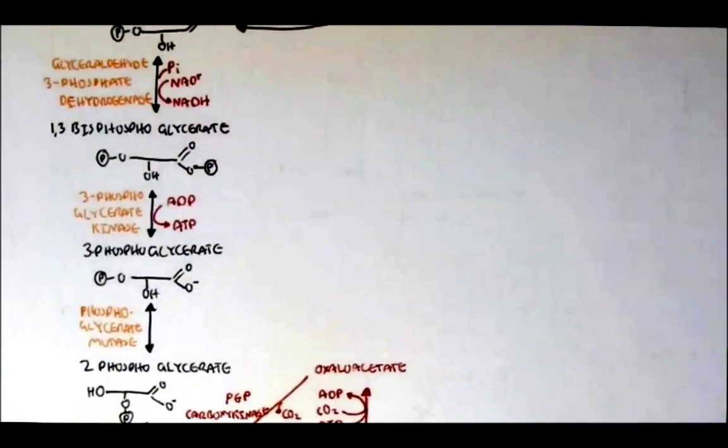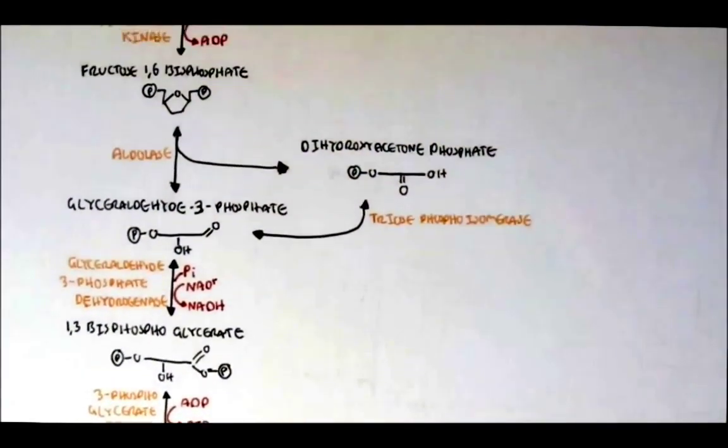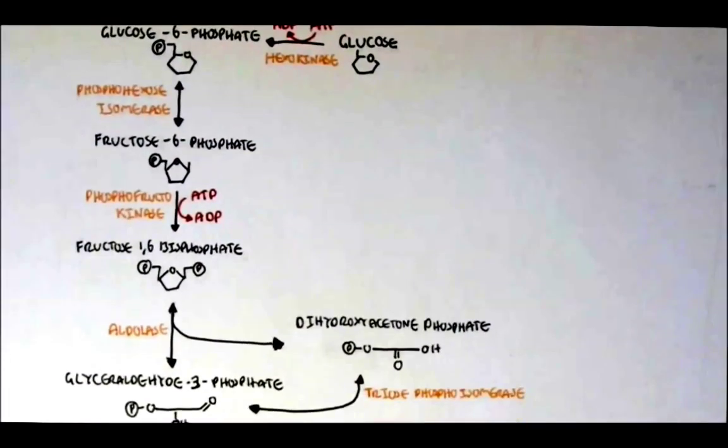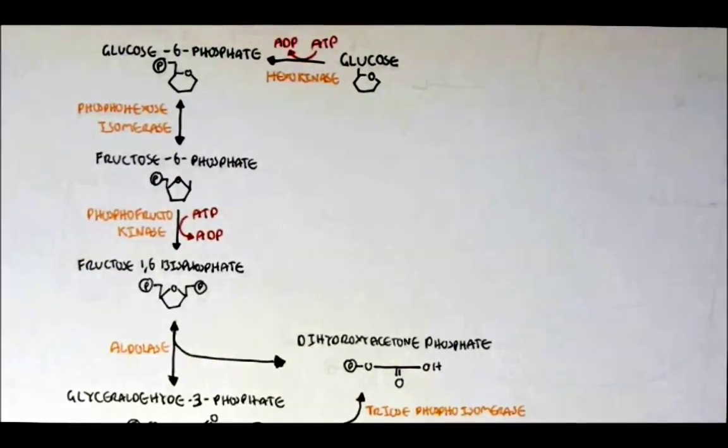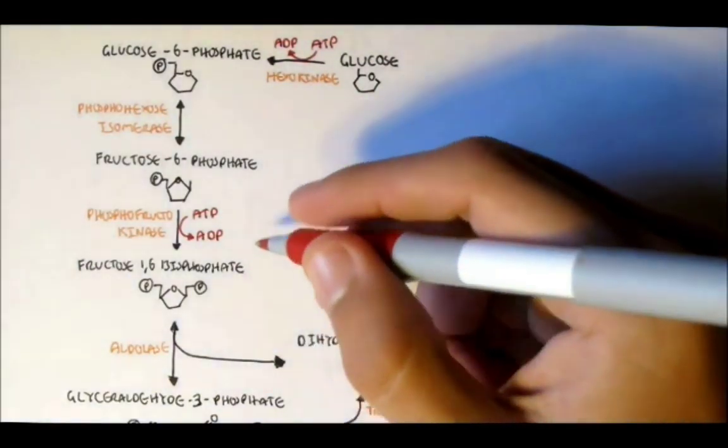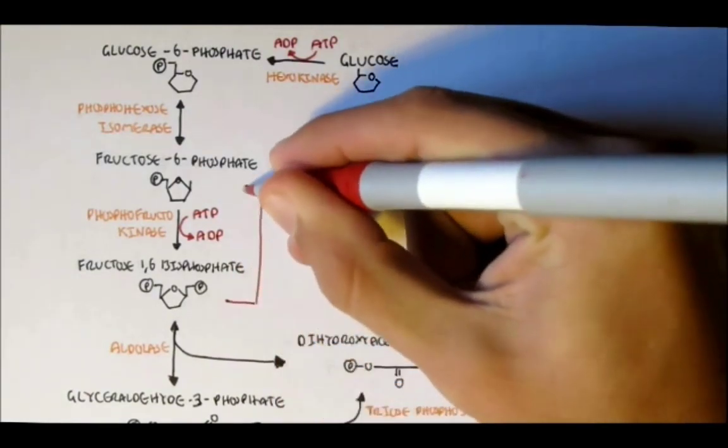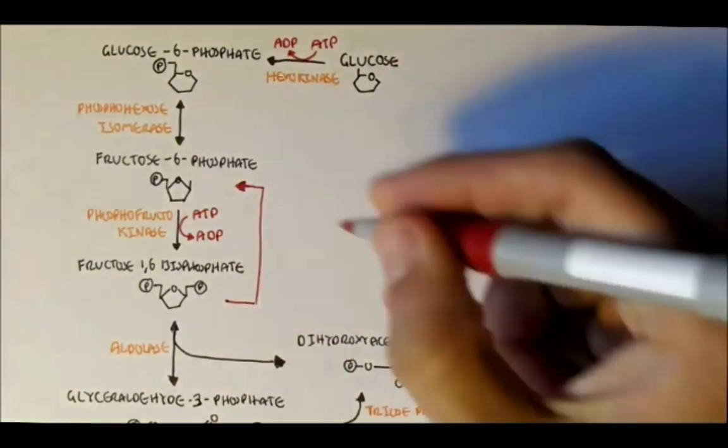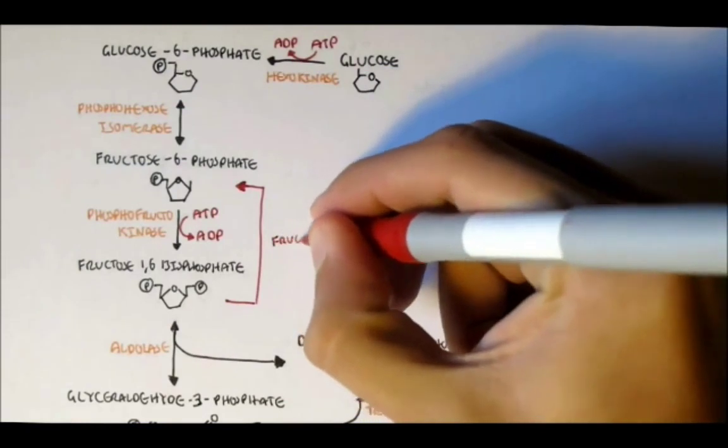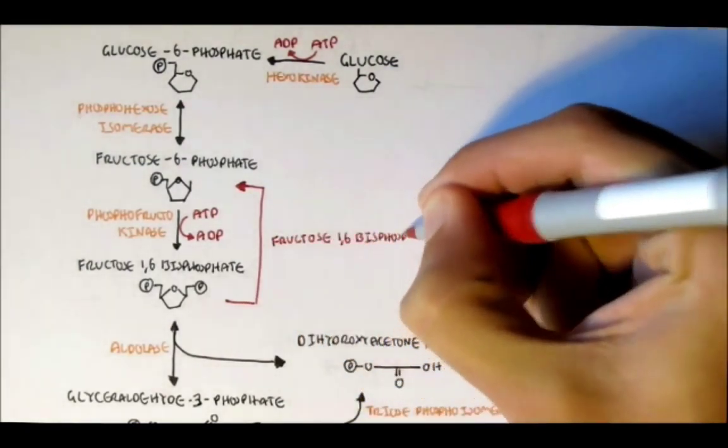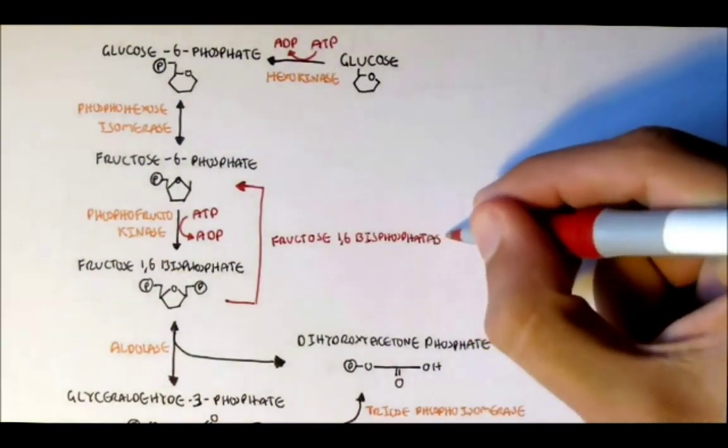The next reaction which is irreversible in glycolysis is from fructose-1,6-bisphosphate to fructose-6-phosphate. This reaction requires fructose-1,6-bisphosphatase which hydrates fructose-1,6-bisphosphate releasing the phosphate.